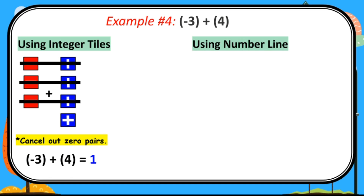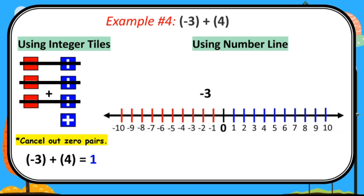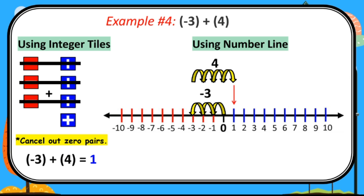Using number line: the first addend is negative 3, so we move 3 units to the left starting from 0 — 1, 2, and 3. The next addend is positive 4, so we move 4 units to the right, starting from where we ended on the first addend — 1, 2, 3, and 4. The corresponding integer is positive 1. Therefore, negative 3 plus positive 4 equals positive 1. Same answer as the integer tiles.